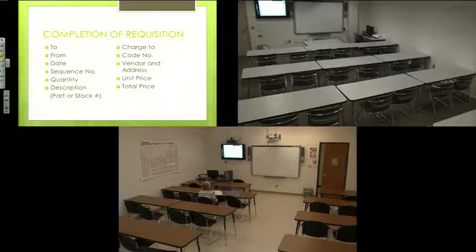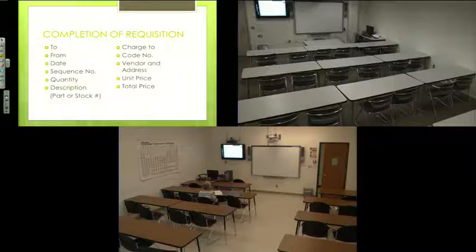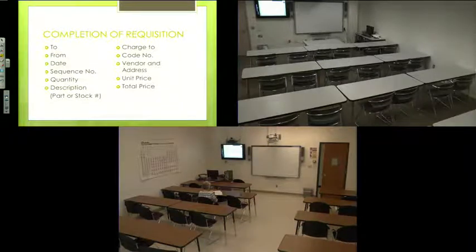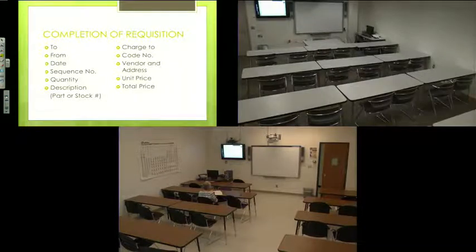The sequence number causes people a lot of problems because they think it's the part number or description number of the item. It's really just numbering the items: one, two, three, four — that's all it is. We couldn't label it 'item number' because people tend to put the wrong thing in that column. So it's strictly just numbering your items.